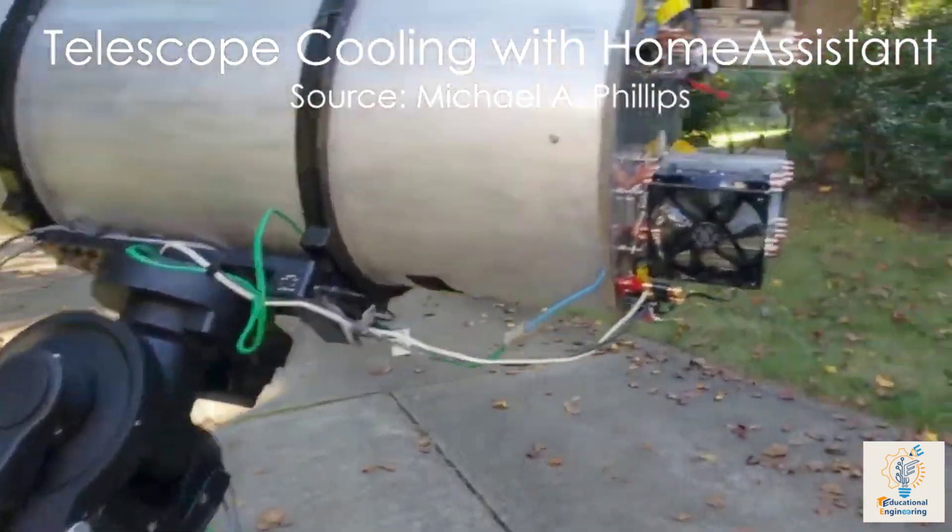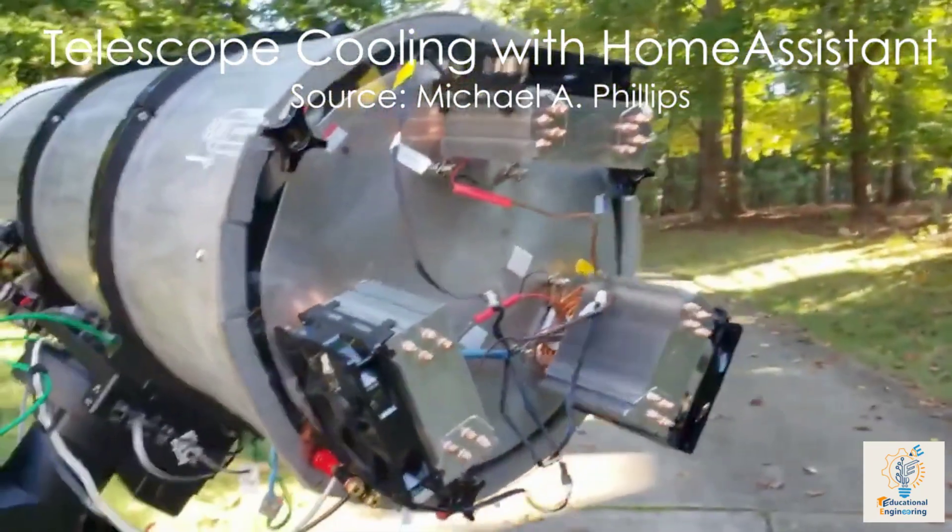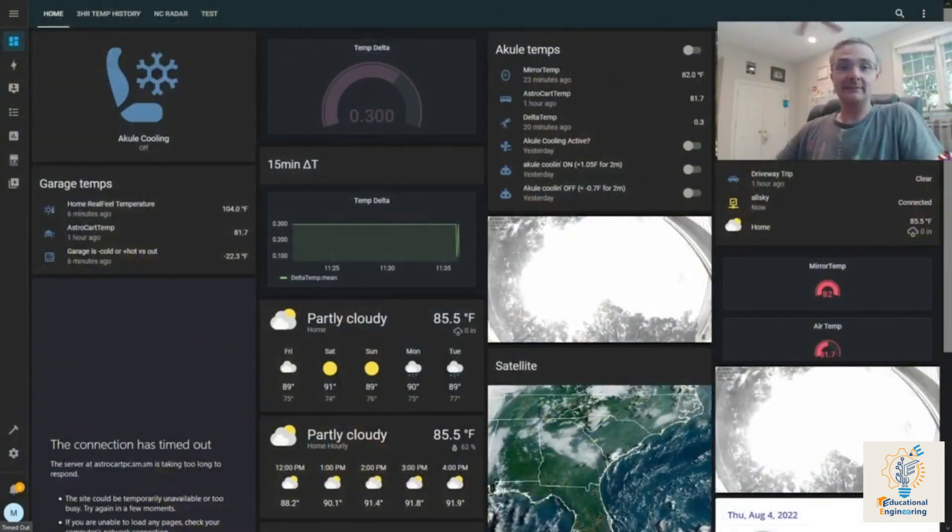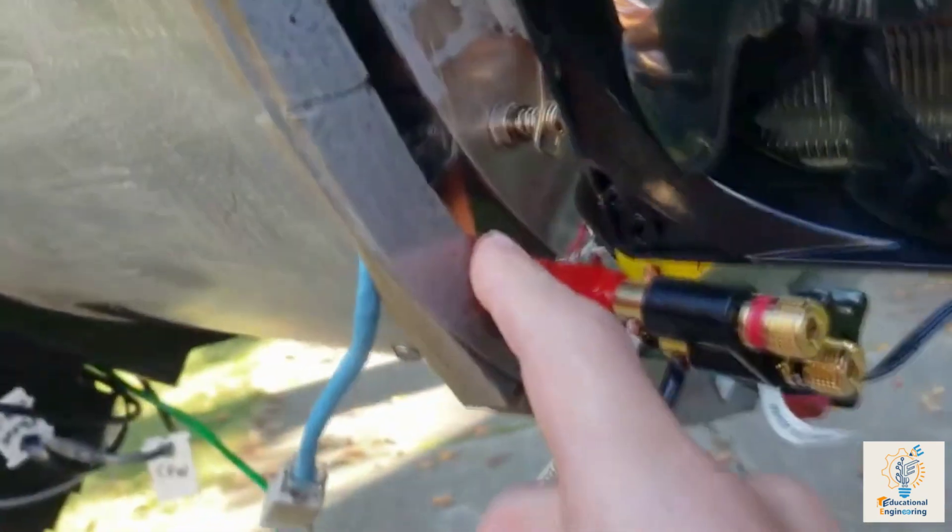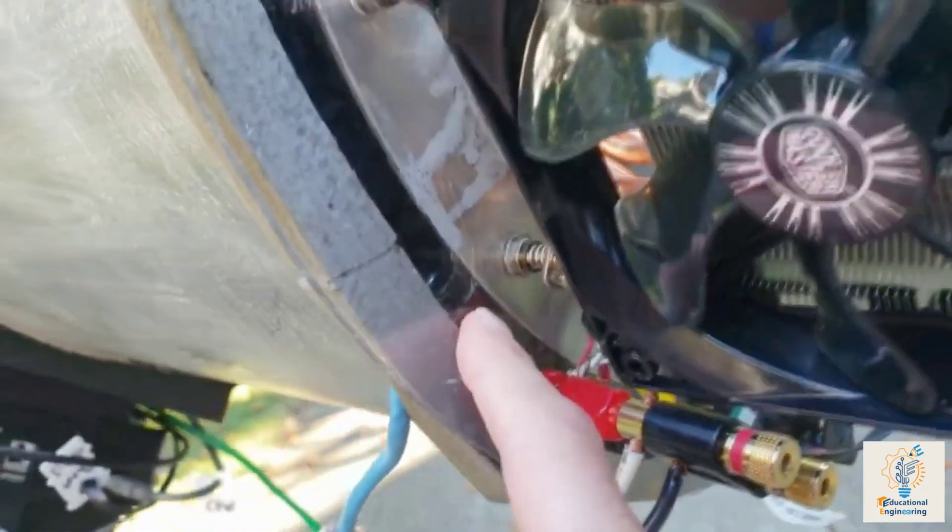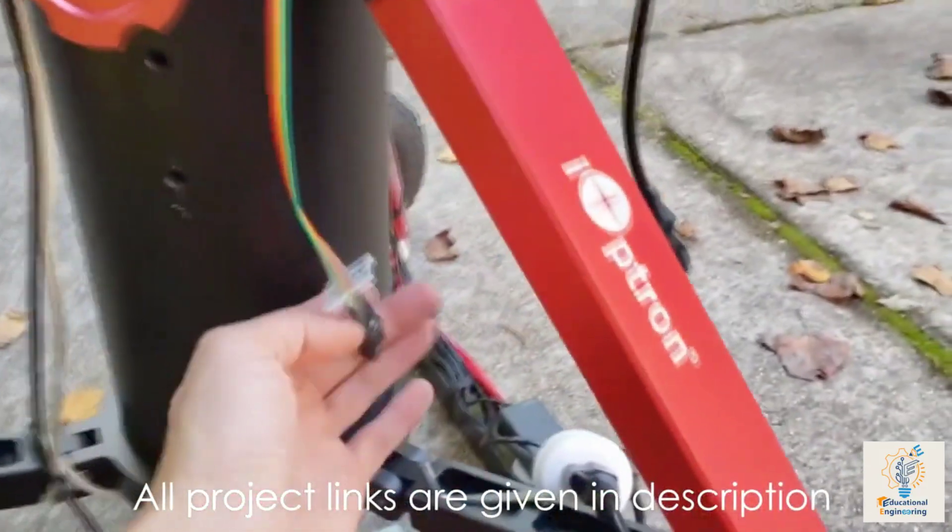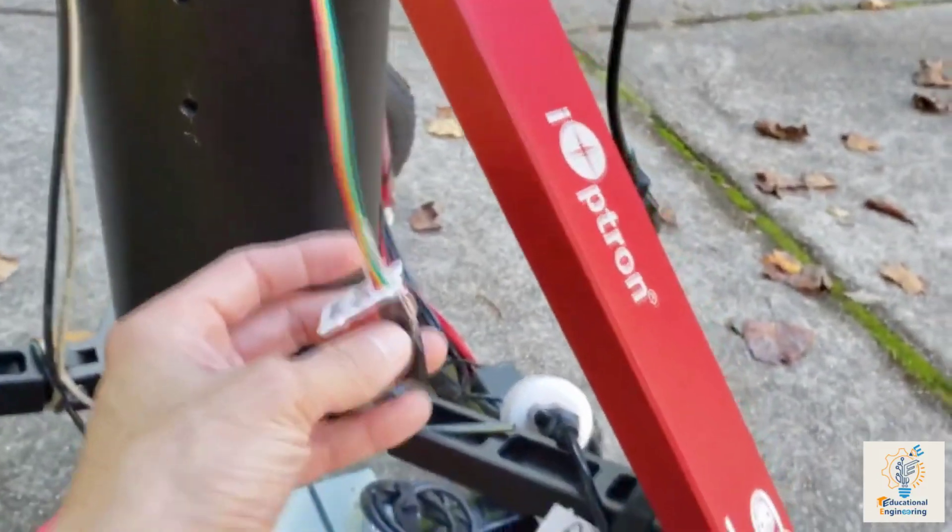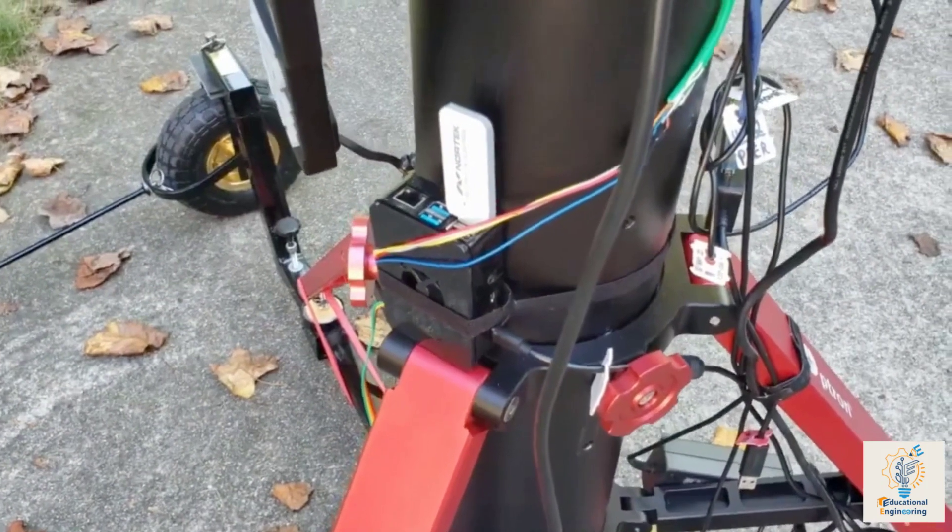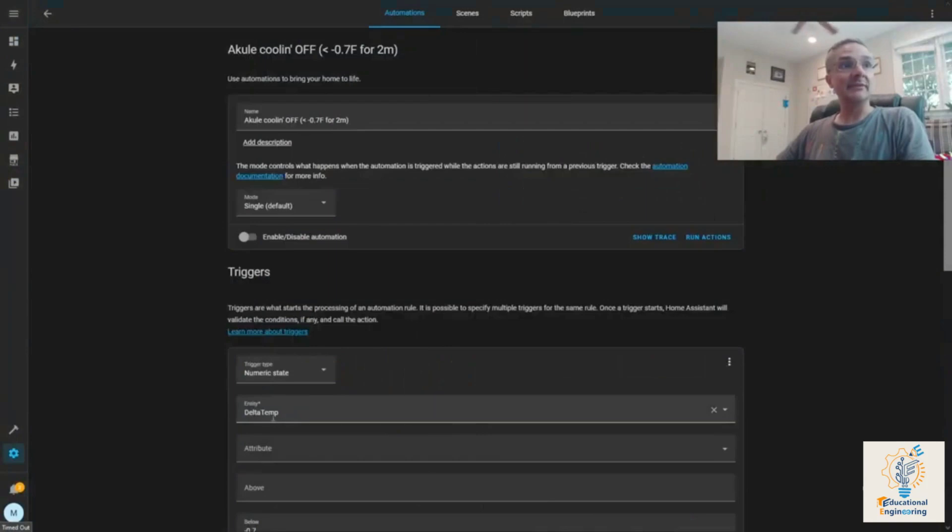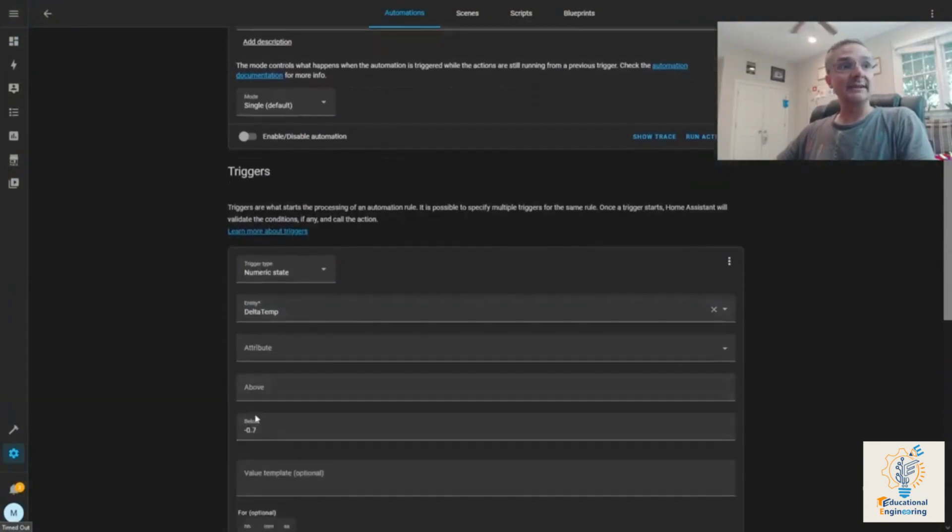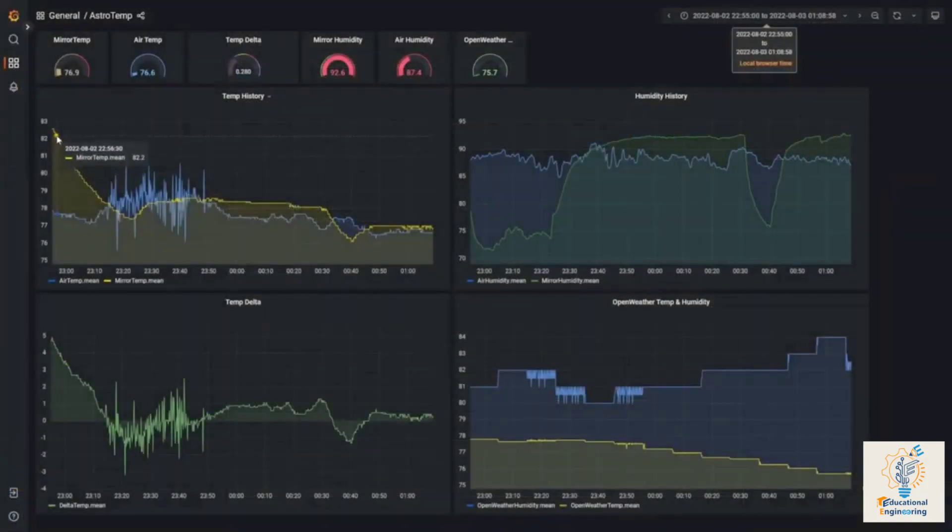In order to remotely control his telescope's cooling system, Michael relied on a home assistant. To make it work, he put two temperature sensors in the telescope. The first one is placed inside the mirror, while the other lies outside, sensing the ambient temperature. The home assistant compares both the temperature values and, based on the difference, it then turns the cooling system on and off. The smart dashboard makes it easy to track the performance.